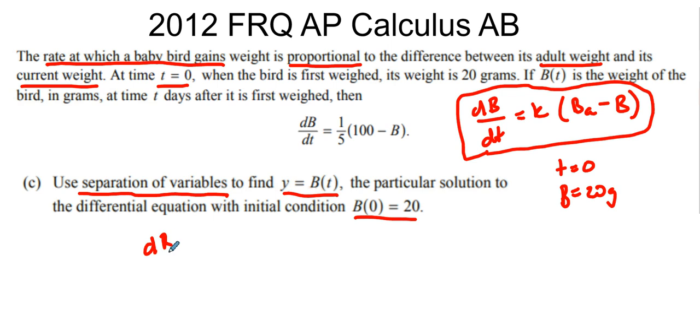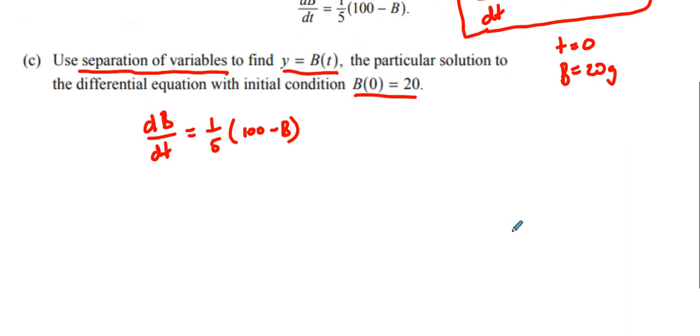So we have db/dt equals 1/5 times 100 minus b, our current weight. From here, what we're going to do is we're going to separate our variables, that's the first step, separate variables. So db, we're going to take this because that's our b expression. So we're going to have db over 100 minus b, and that equals 1/5 dt.